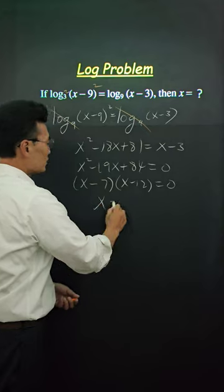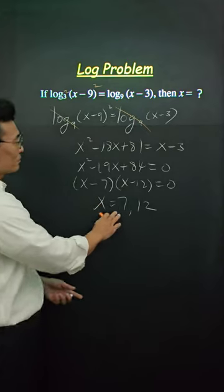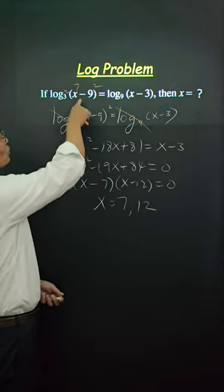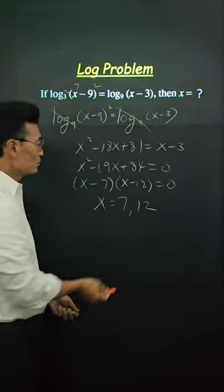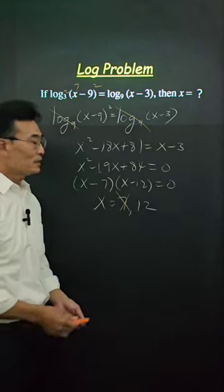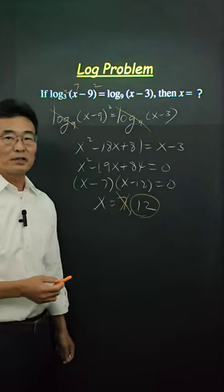Then we get x equals to 7 or 12. Only thing is, if I take the 7, plug it in here, we get a negative value. And you can't take the log of a negative number. So 7 will be eliminated and 12 will be our only answer.